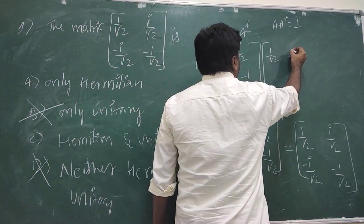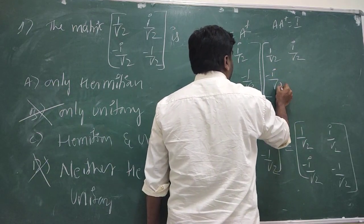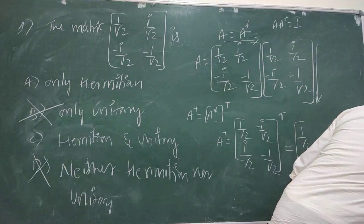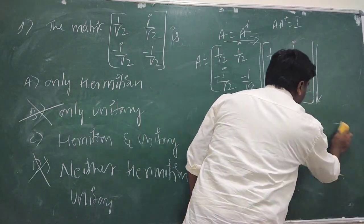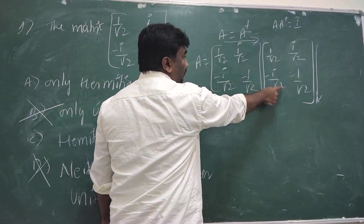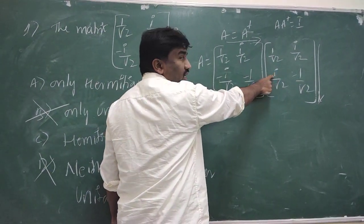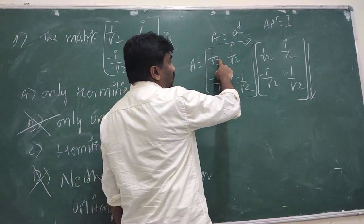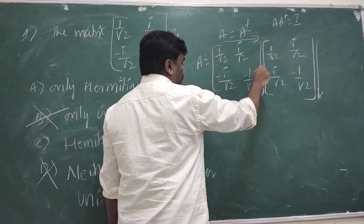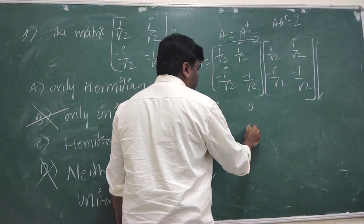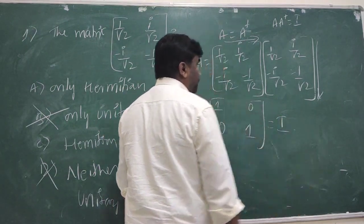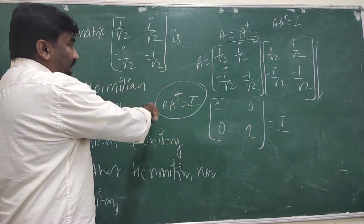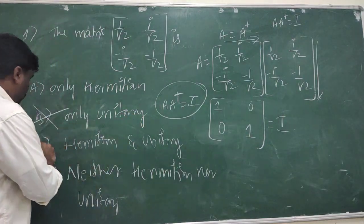Computing the matrix multiplication: (1/√2)(1/√2) = 1/2, and (i/√2)(−i/√2) = −i²/2 = +1/2, so the (1,1) entry is 1/2 + 1/2 = 1. The off-diagonal entries give 0. The result is the identity matrix [[1,0],[0,1]]. Therefore A·A† = I, so the given matrix is both Hermitian and unitary. Option C is correct.